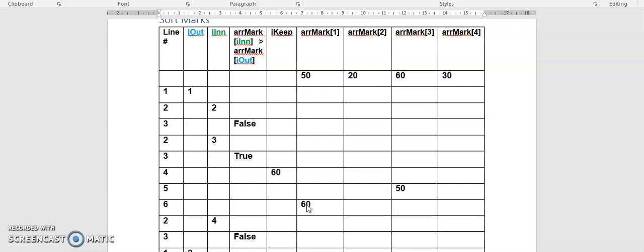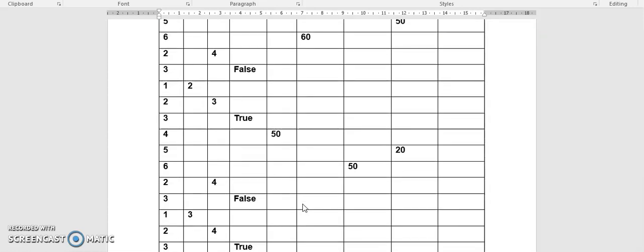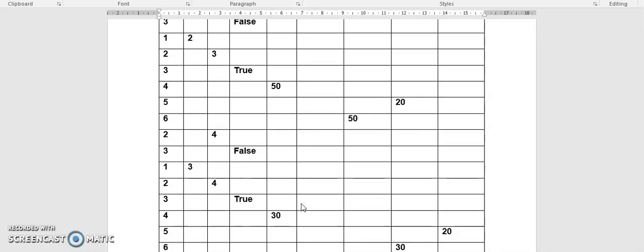I have now stored the highest value in the position 1. So while iout is 1, I'm going to scroll down just so that you can have a look if you were able to get this trace table. And at the end, you will have the highest mark 60 was stored in this column, then 50 in the next one, then 30 in the next one, and then 20 in the last one. So now I have sorted my marks from highest to lowest.